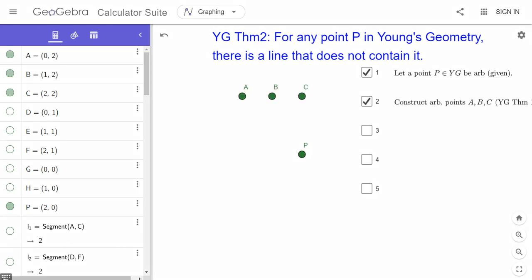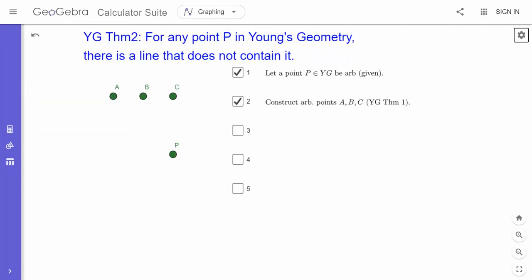So the next step is to construct arbitrary points A, B, C, D, and this is due to Young's Geometry Theorem 1. Theorem 1 says there are at least four points in the geometry.